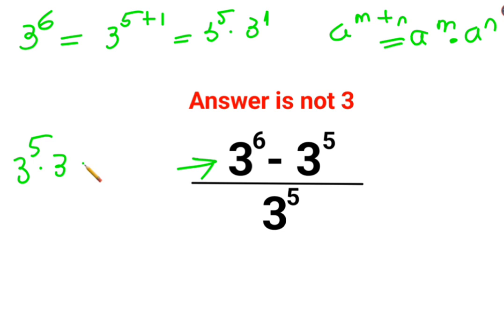Instead of 3 raised to 6, let's write 3 raised to 5 multiplied by 3 raised to 1, which can be written as 3 minus 3 raised to 5 upon 3 raised to 5. Now let's take 3 raised to 5 common in the numerator, so I'm left with 3 minus 1 upon 3 raised to 5.